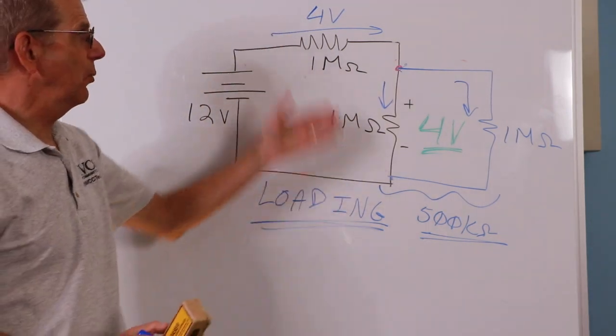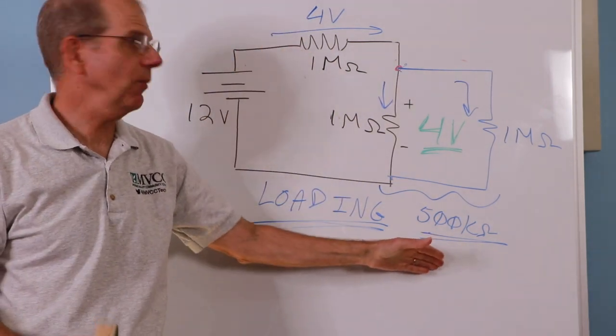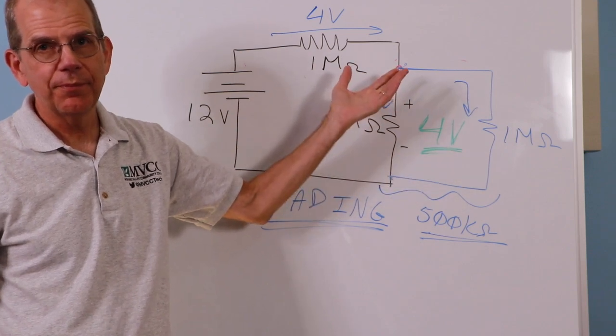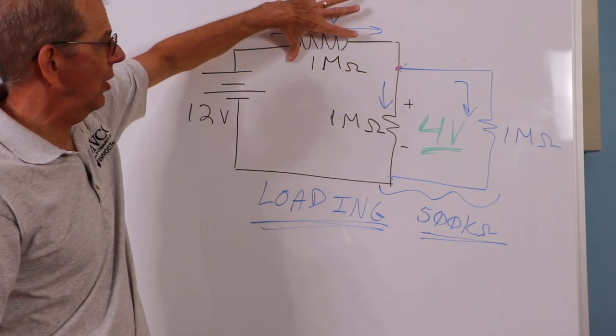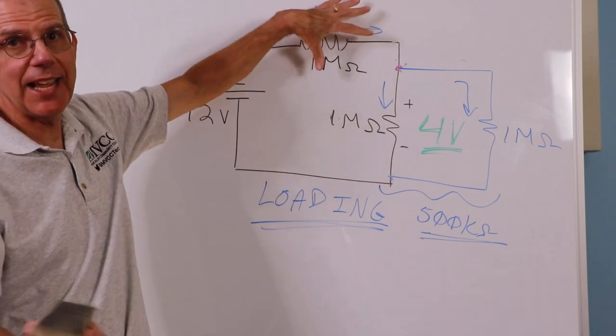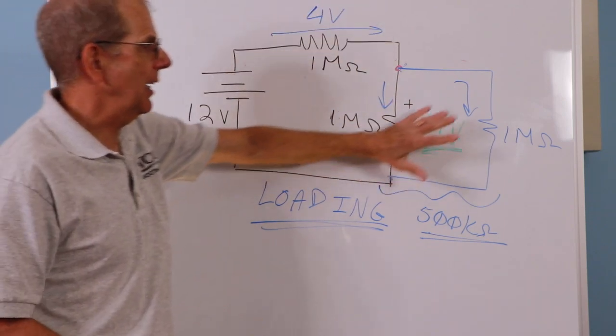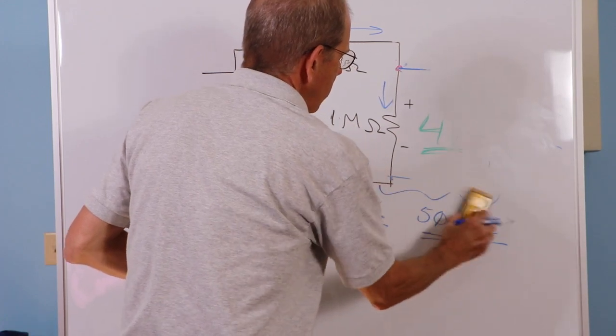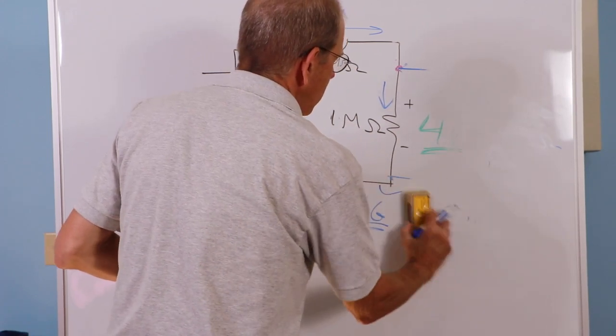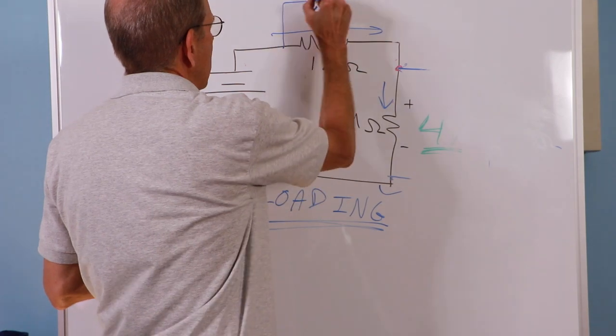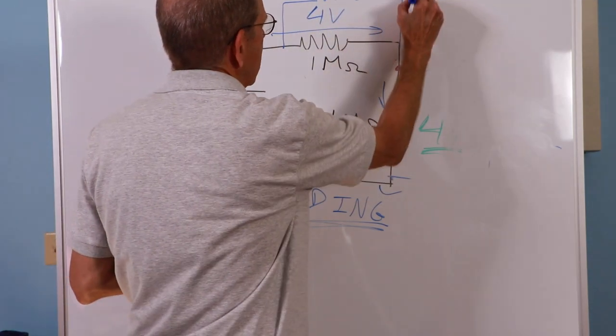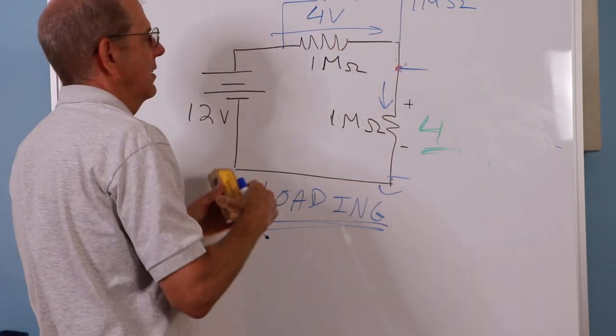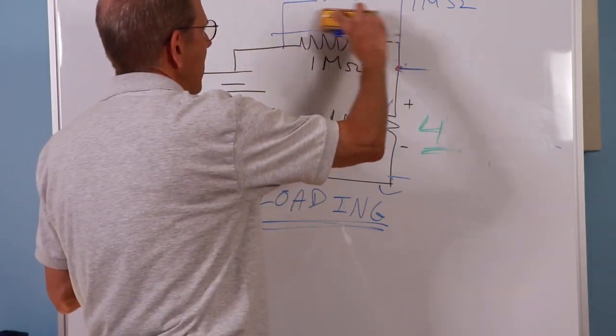Now, if you did a voltage divider between a 1 meg and a 500k, well, guess what? You'd come up with 4 volts. Now, when you turn around and you put the meter across the upper resistor, the same thing happens. I get rid of this. I put the meter on top. And that also looks like a 1 meg.